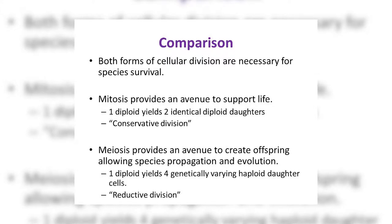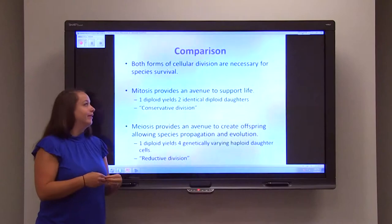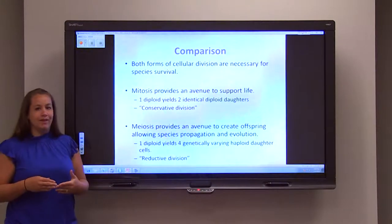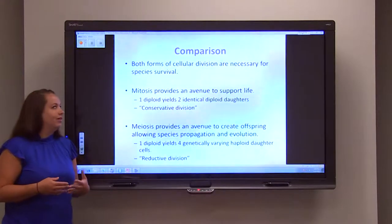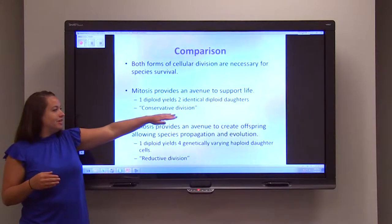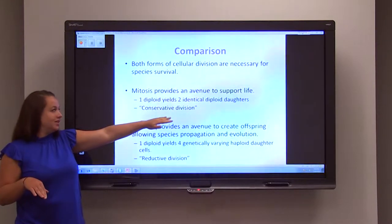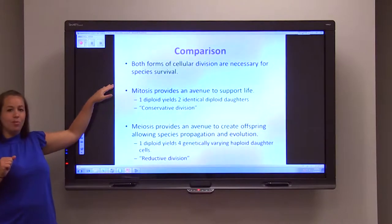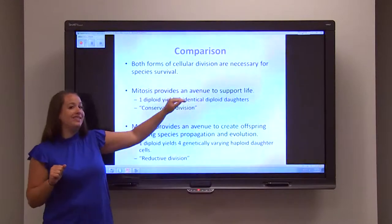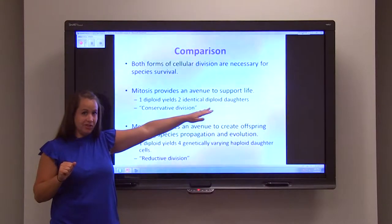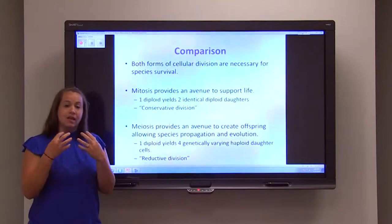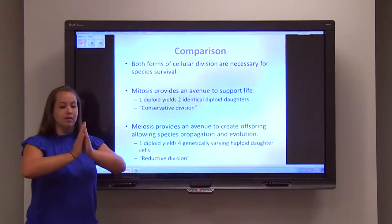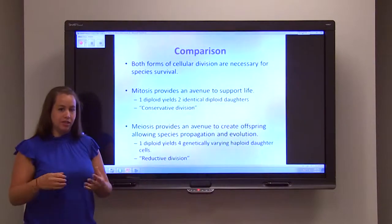Both methods of reproduction are necessary for propagation and species survival. Mitosis is the avenue that supports life, evident in daily activities like growth and wound repair. This is considered a conservative division, because one diploid cell yields two identical diploid daughter cells. You're conserving not only the number of chromosomes, but also their layout, organization, and genetic makeup.